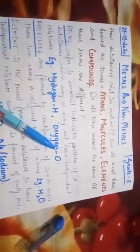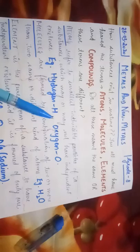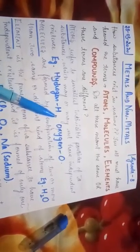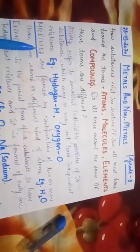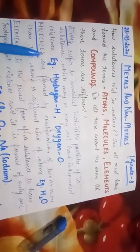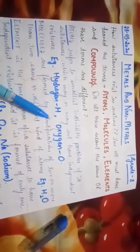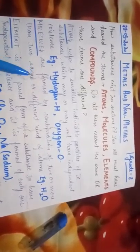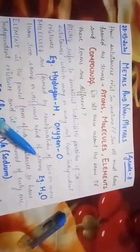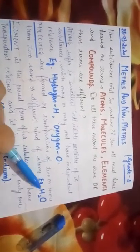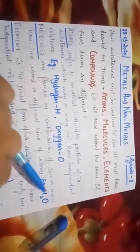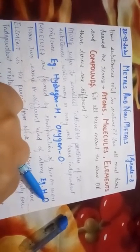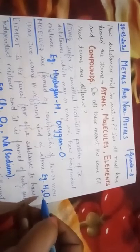Then the second thing is molecules. Molecules are formed by combination of two or more than two same or different kind of atoms. For example, in water you can see that there are two different kind of atoms, hydrogen and oxygen. But if I write H2 only, then H2 contains two atoms of the same kind.